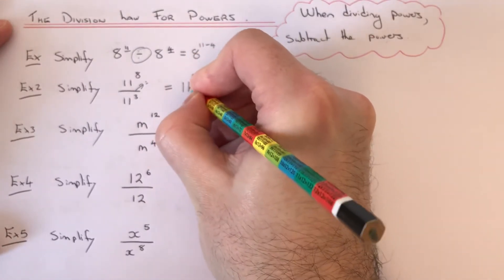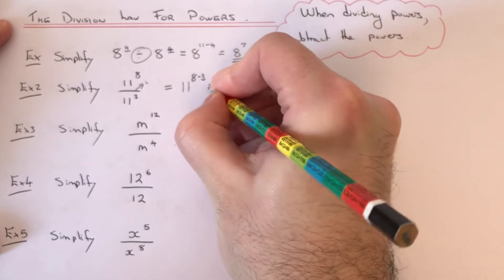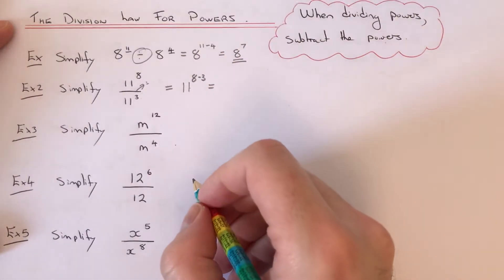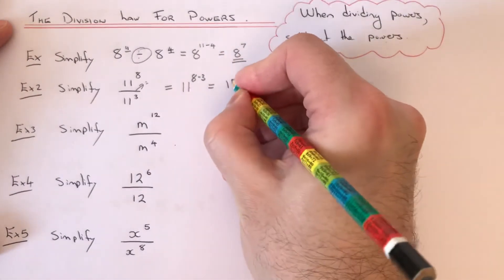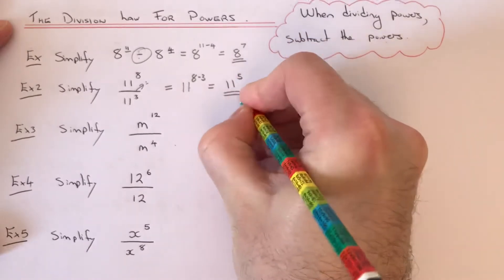Keep that base number the same. 8 take away 3 is 5, so we get 11 to the power of 5.